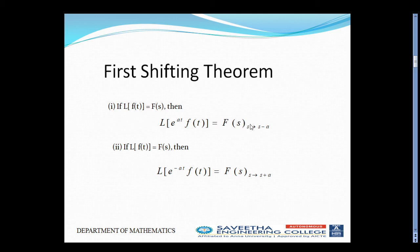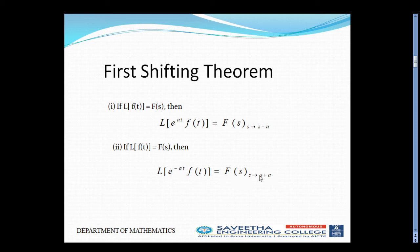After finding L of f(T), we substitute S as S minus A. Then if L of f(T) equals capital F(S), we write L of e^(-AT) into f(T) is equal to capital F(S) where we replace S with S plus A. Here, if a negative sign is there, we should replace with plus A.